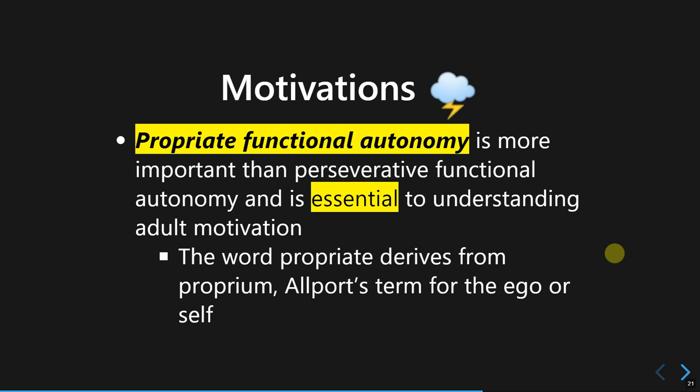The last part of motivation is propriate functional autonomy, and Allport says this is very central and important as it shapes our unique traits and personality. The term 'propriate' derives from 'proprium,' meaning ego or ourselves. This motivation is directed toward personal growth and reflects our aspirations — our wishes, hopes, and desires for what we want to achieve in the future.